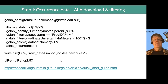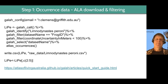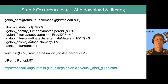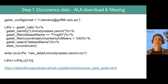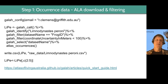You can do a lot of this within EcoCommons — there's now a filter option for ALA data. But ALA collects a lot of columns of data for each record, and not all columns are available for filtering within EcoCommons. So if there's something you're specifically interested in that's not available, you can do your filtering this way in R.